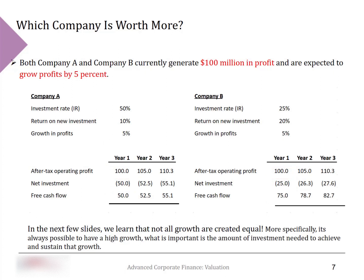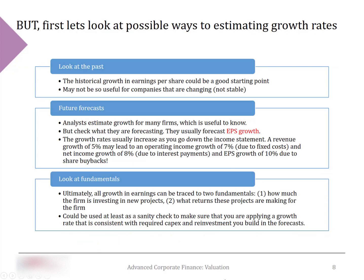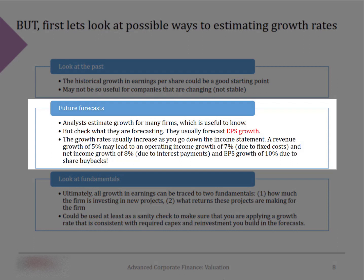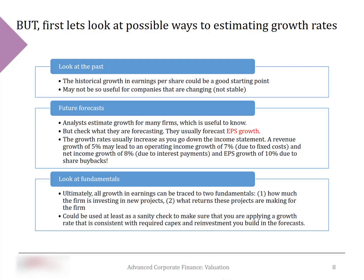Before formally showing how growth and value are related, let's look at different methods to estimate future growth rates in your DCF. There are three approaches. First, look at the past and compute historical growth rates. Second, check analyst forecasts, which are forward-looking, though there may be large disagreements between analysts — especially for younger, less mature companies. Also note that analysts typically forecast earnings per share growth, which may differ from the EBIT growth needed for DCF valuation.